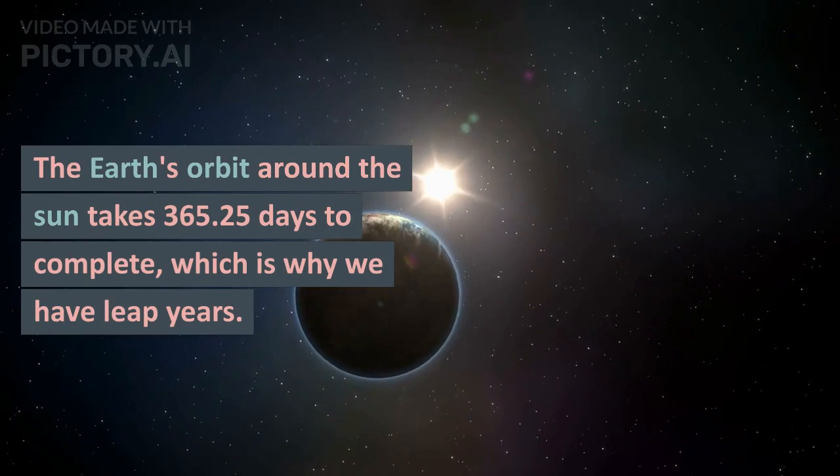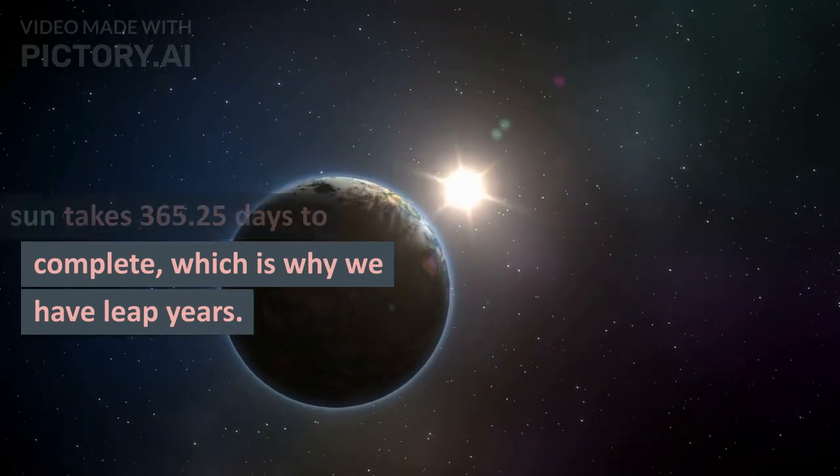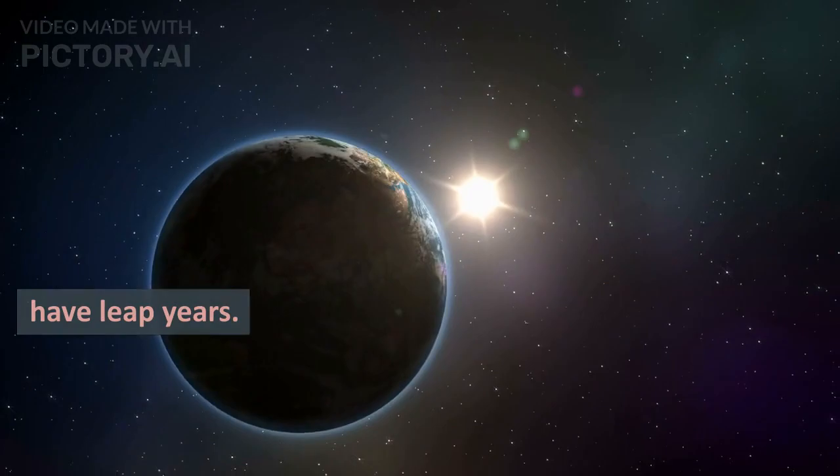The Earth's orbit around the Sun takes 365.25 days to complete, which is why we have leap years.